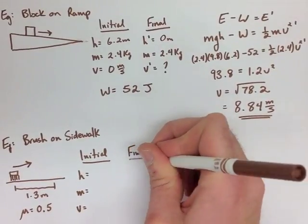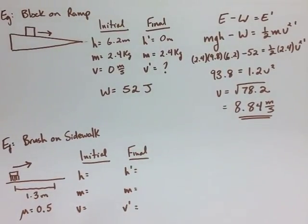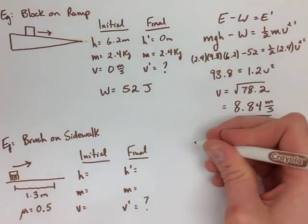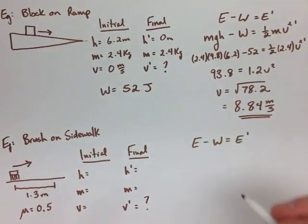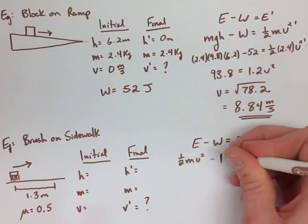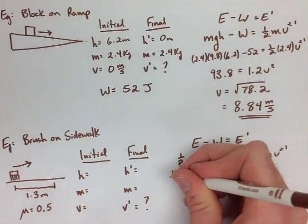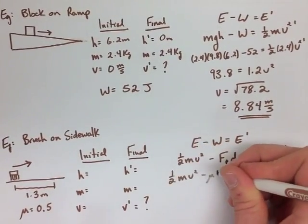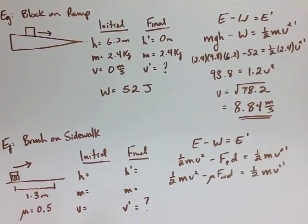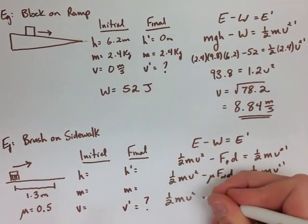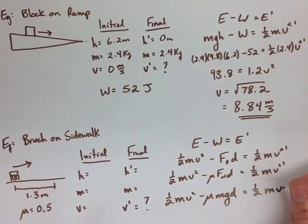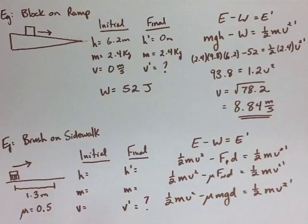We set up our equation where we have energy minus work equals energy prime. Both of these sides, we have no gravitational potential energy, so it's only kinetic energy and work. In this case, work is equal to the force of friction times the displacement. So we also then can change the force of friction to mu FN. And you can notice in this equation that we have our FN is equal to FG. So we know that our force of friction is equal to mu MG.